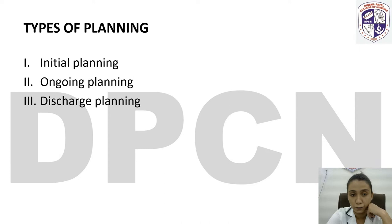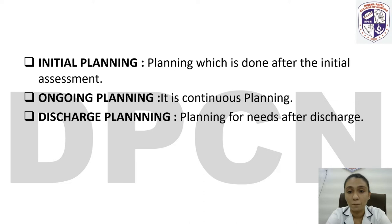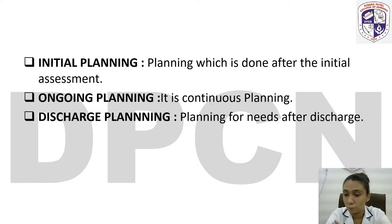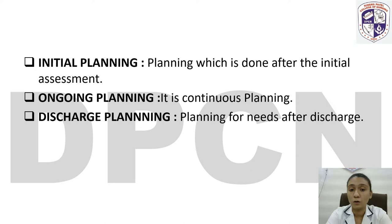Types of planning — there are three types. First, initial planning: planning which is done after the initial assessment. When the patient comes into the hospital, we assess the patient's condition, and on the basis of signs and symptoms, we make initial planning immediately after assessment.